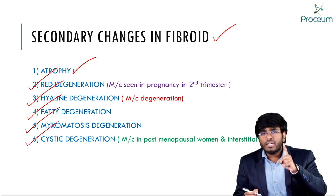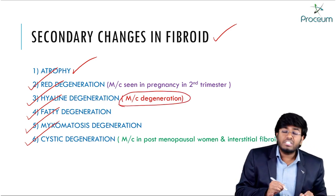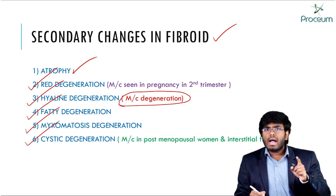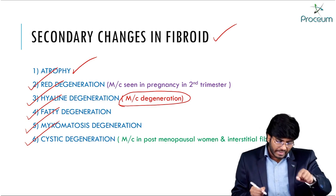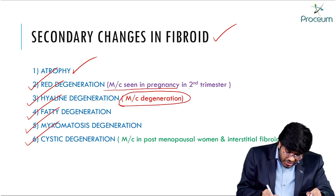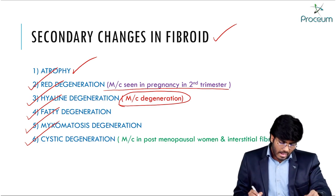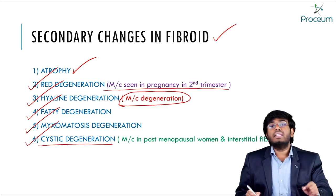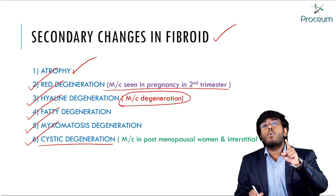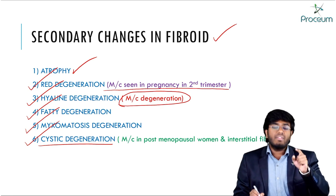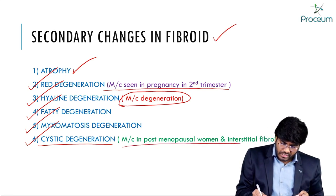The most common type of degeneration is hyaline degeneration. Red degeneration is most commonly seen during pregnancy, especially in the second trimester. Cystic degeneration is seen in postmenopausal women, and intramural fibroids — the most common type — also undergo cystic degeneration.